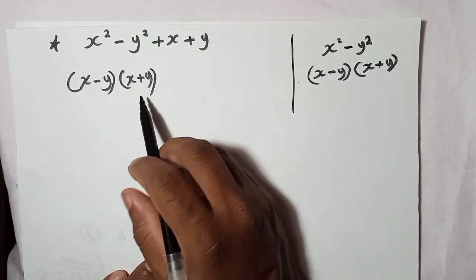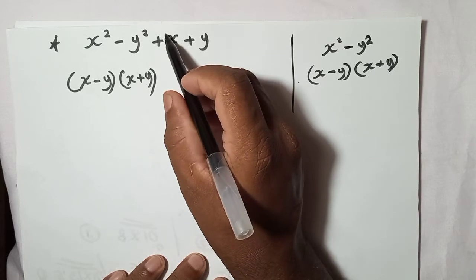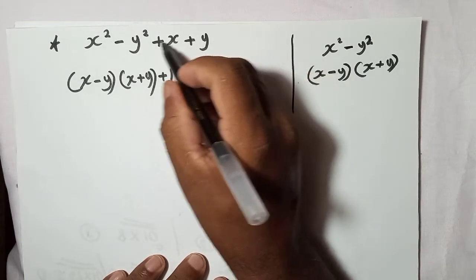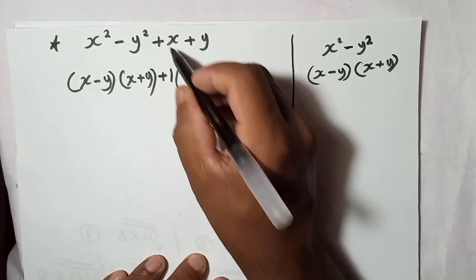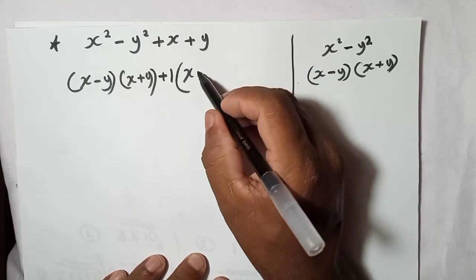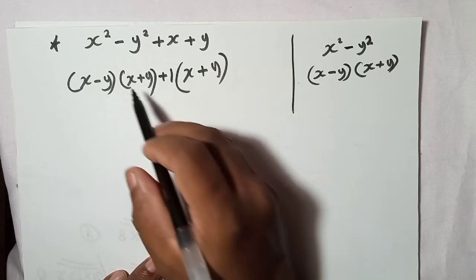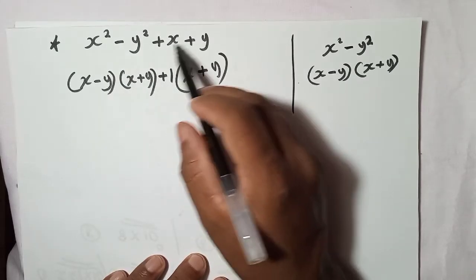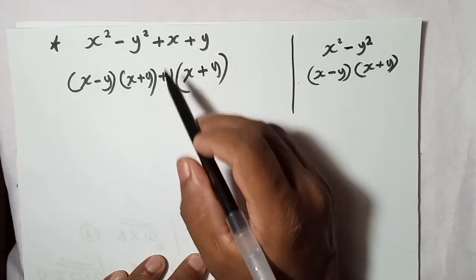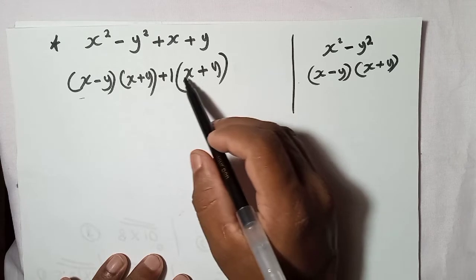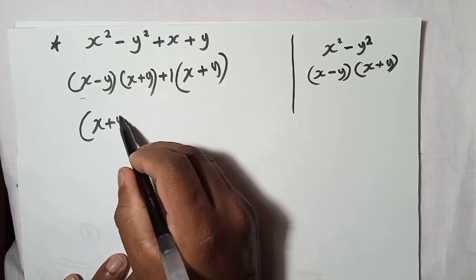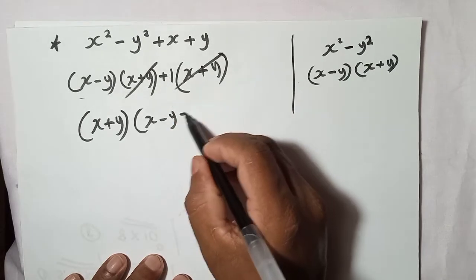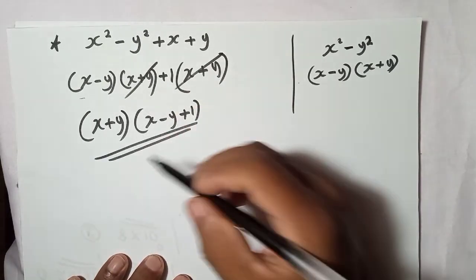So here I will take one outside. One times x and one times y — it doesn't change anything. After taking one outside, we have one times x plus y. Now x plus y is common in both parts. Take x plus y outside, and the remainder from the first part is x minus y, and from the second part is plus one. So the final factorized answer is x plus y times x minus y plus one.